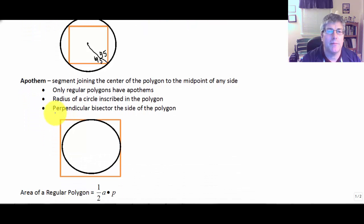Next is the apothem. The apothem of a regular polygon is a segment joining the center of the polygon to the midpoint of any side. So I go from the center to the midpoint of the side.